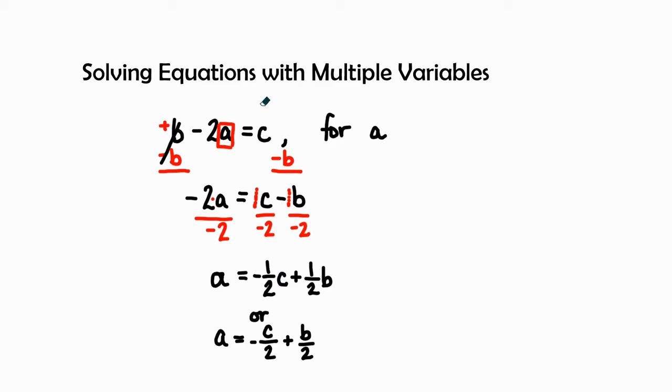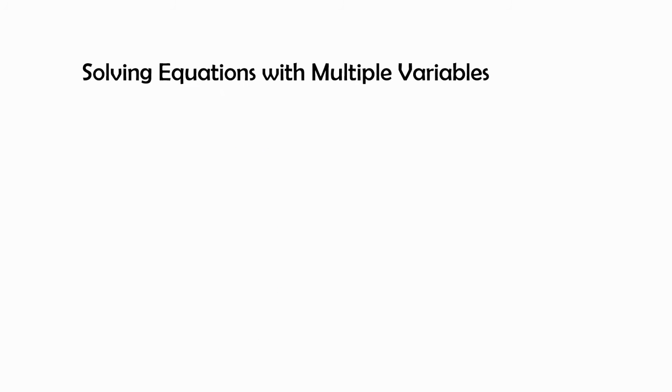All right. One more example. Here we go. Let's write our example. Our last example is 4n equals 3m, the letter m as in Mary, minus 1, or the m as in math. And we are going to solve this equation with multiple variables for the letter m.